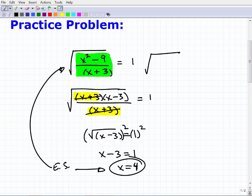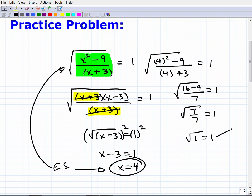So x is going to be equal to 4. So we're going to have 4 squared minus 9 over 4 plus 3. Is this all going to be equal to 1? So of course, 4 squared minus 9, let's write this over here, is going to be 16 minus 9 over 4 plus 3 is 7. Is that equal to 1? So 16 minus 9 of course is 7. So we have 7 over 7. Is that equal to 1? 7 divided by 7 is 1. What's the square root of 1? Is the square root of 1 equal to 1? Yes, it is. Okay, so because that's true, this in fact is the solution.